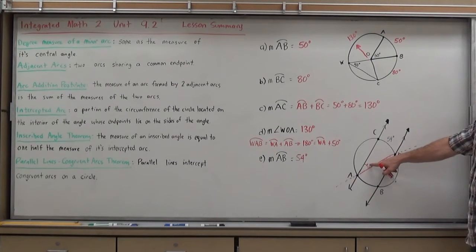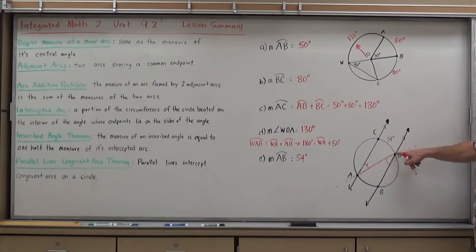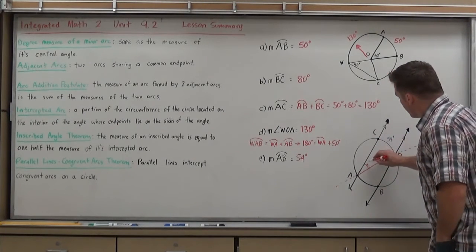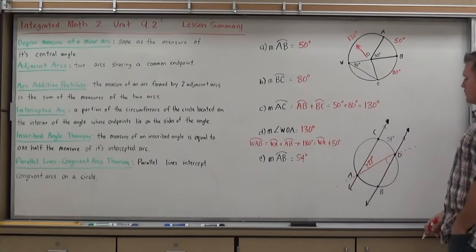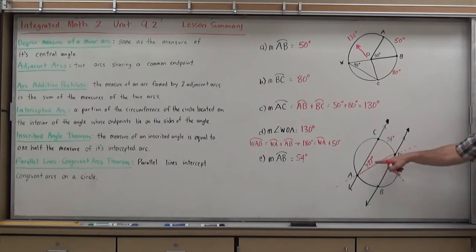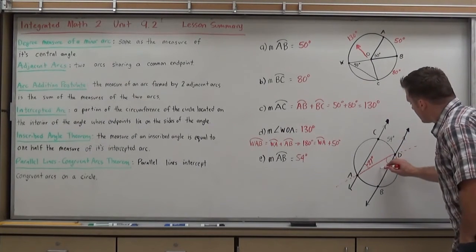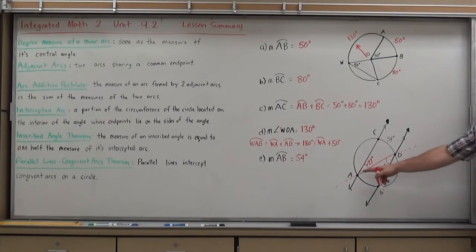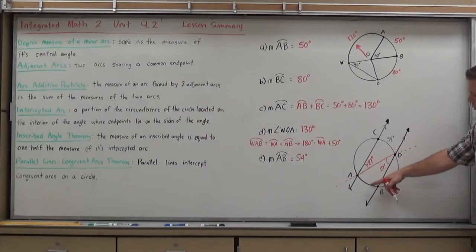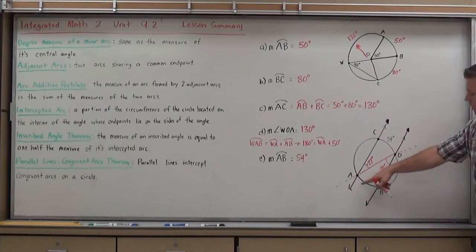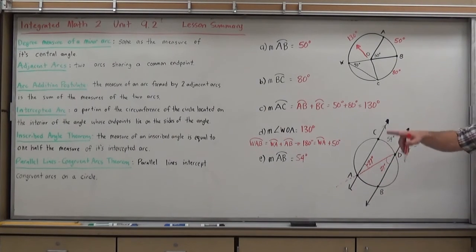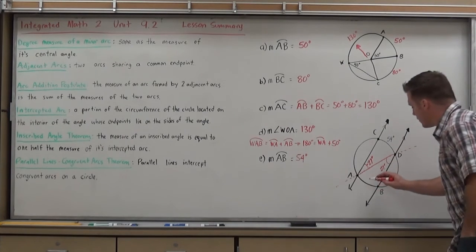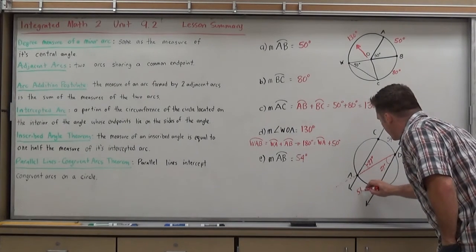And this angle is an inscribed angle. It is always half its arc. The arc it's formed is CD. So this angle has to be half that, 27 degrees. And if these are alternate interior angles, they're congruent. So this angle has to be 27 degrees. And it's an inscribed angle forming arc AB. And arcs of inscribed angles are twice the measure. So twice of 27 is 54 degrees.